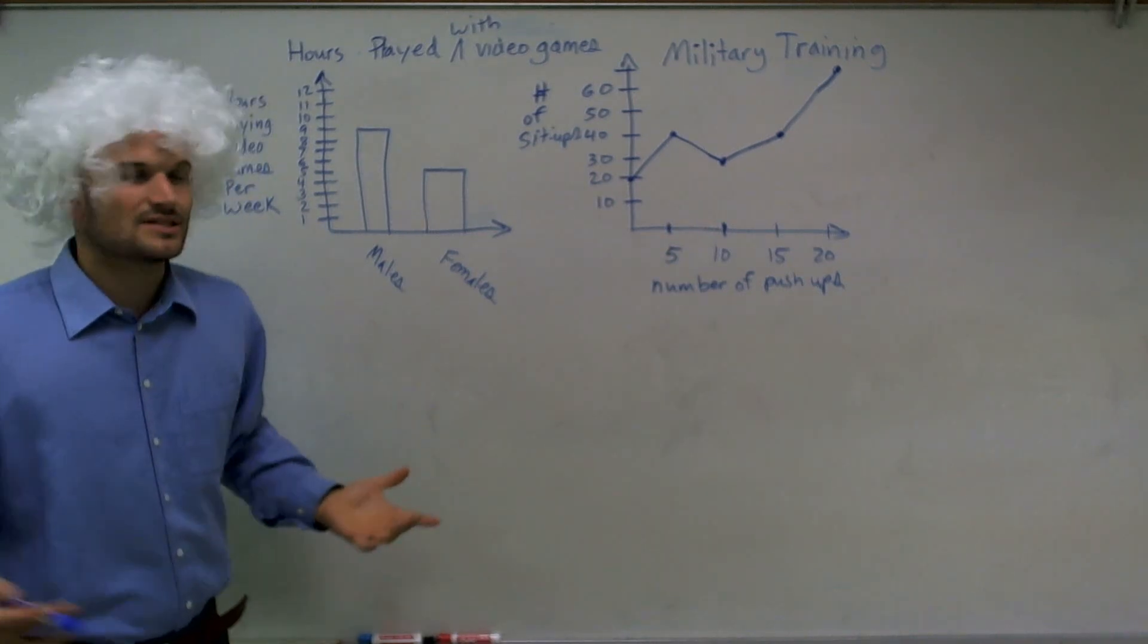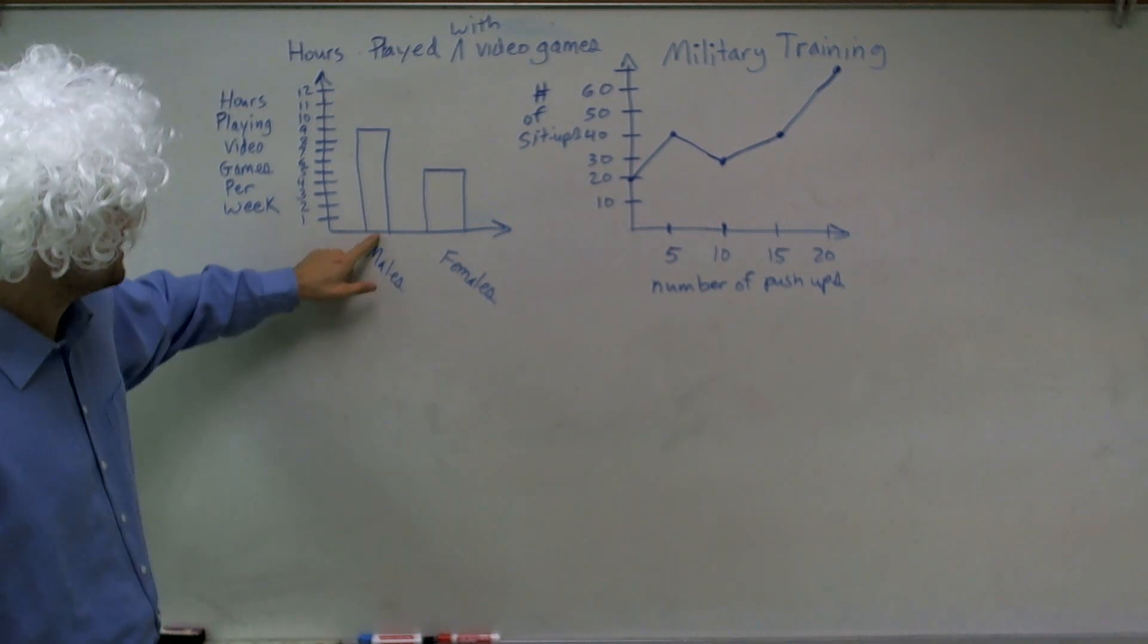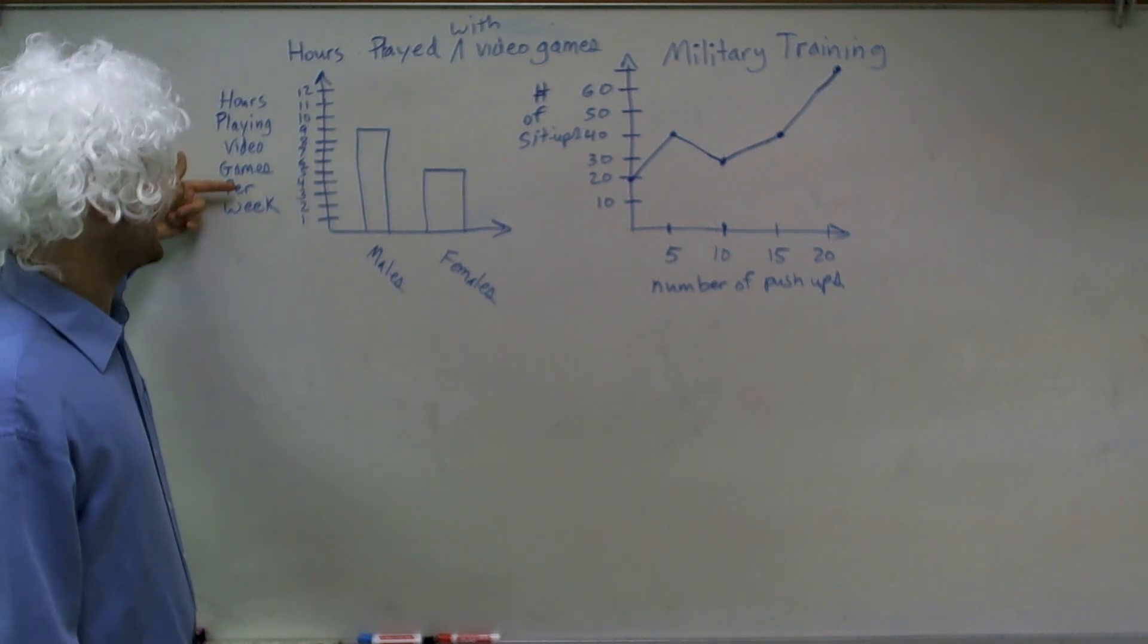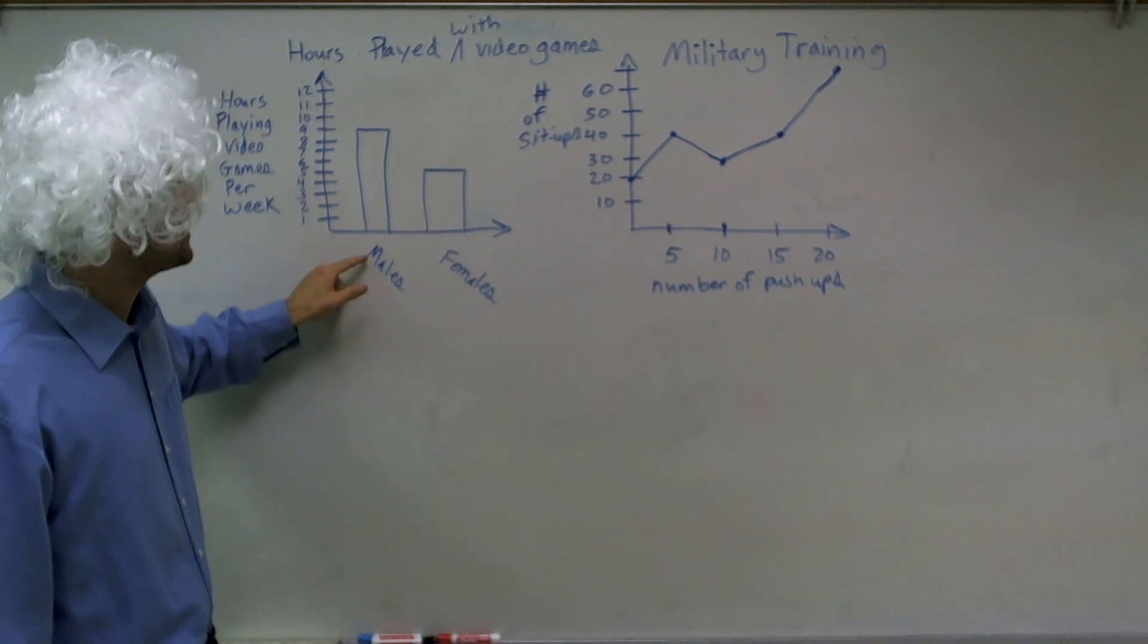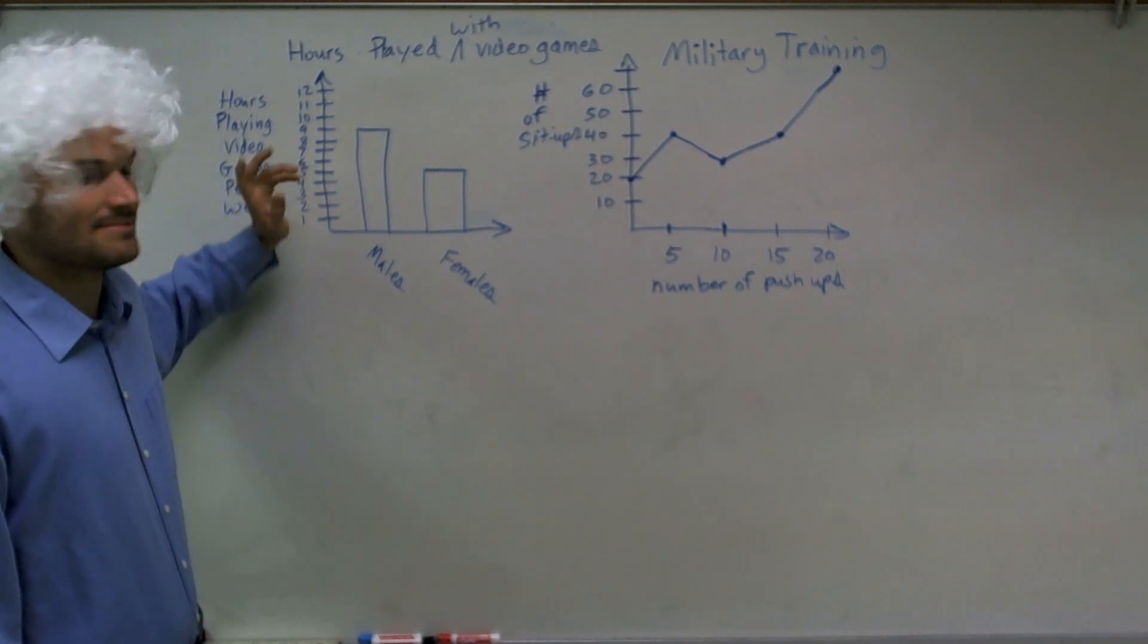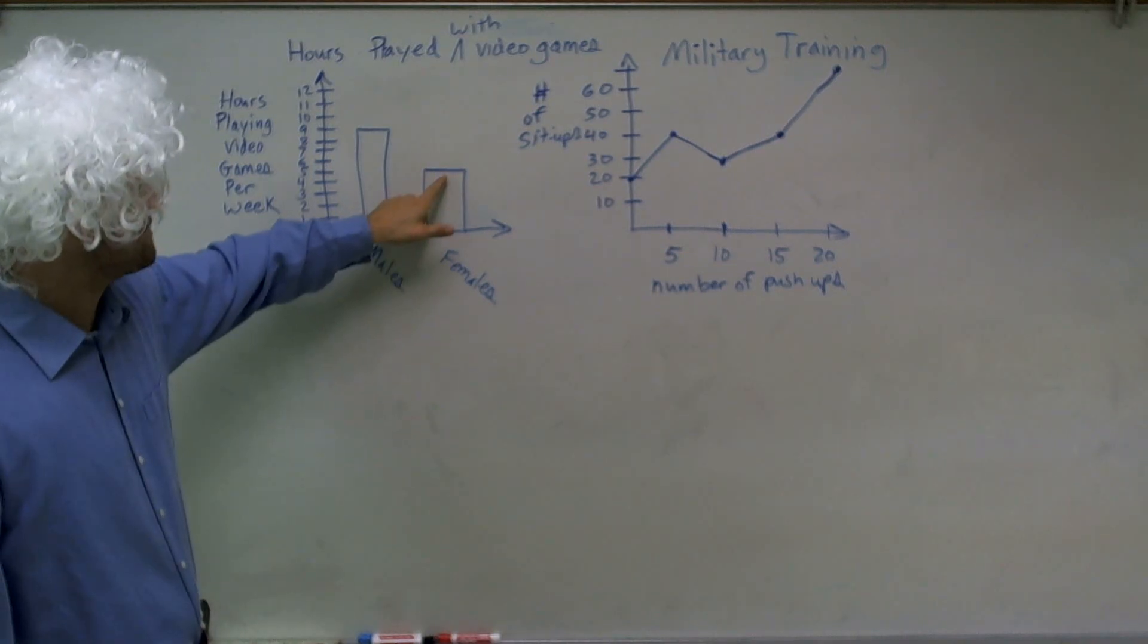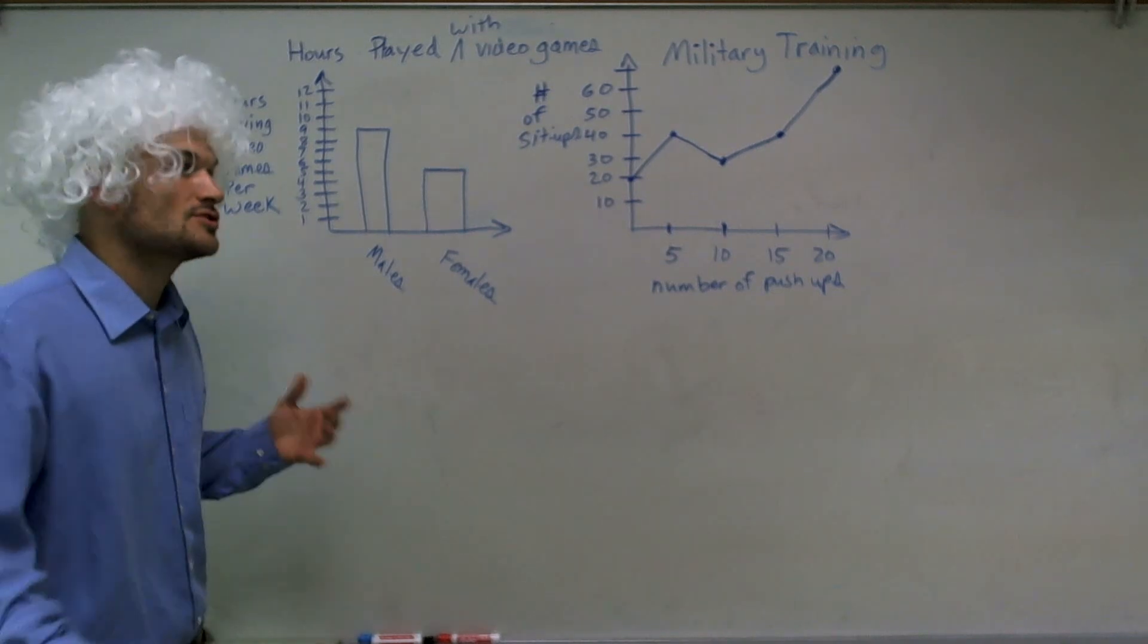So by me reading this graph, what I'm going to do is I'm going to look at the male side. And I'll see males. Well, that goes all the way up to nine. Well, what does nine represent? Nine represents the hours played per week. Therefore, I can determine by reading this graph that males play nine hours of video games per week. Then I'll move over to the female side.